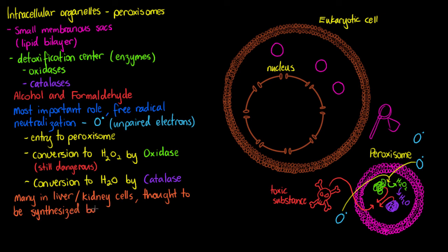Let's just review quickly everything we know about the peroxisomes now. We know that they're small membranous sacs within the cell and they're smaller than our lysosomes. They have their own lipid bilayer and they're the detoxification centers. We're going to find enzymes in there such as oxidases and catalases that will be breaking down toxic substances and neutralizing free radicals.